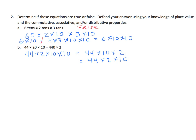Well, I can clearly see that 44 times 2 times 10 times 10 is not the same as 44 times 2 times 10. So again, we're going to put a not equal sign there. And we're going to put false. I've got a warning for you, though. Not all of these are false.